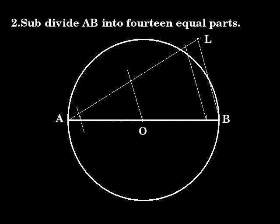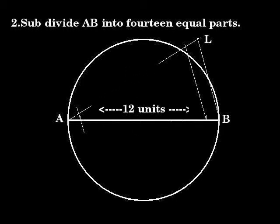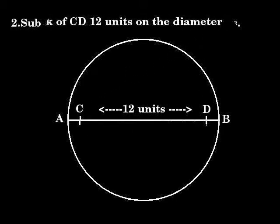Our third step is to mark off CD 12 units on the diameter of the circle.